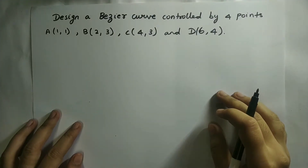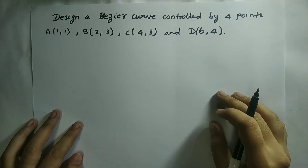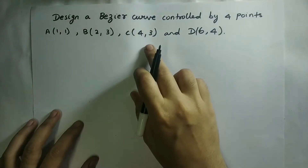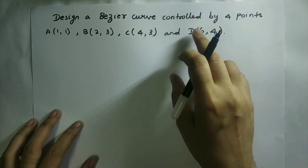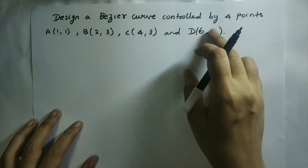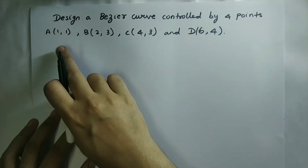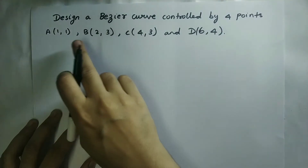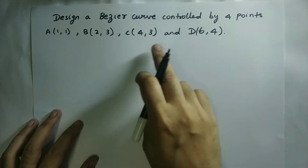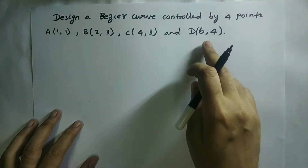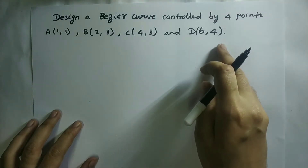In this video, let us look at an example of Bezier curve. The question is: design a Bezier curve controlled by four points — point A, point B, point C, and point D — each with their respective coordinates.